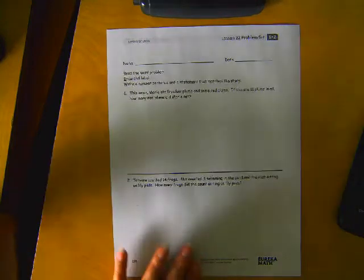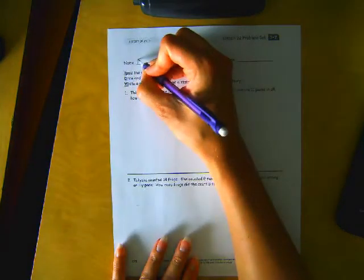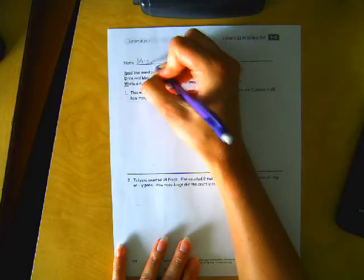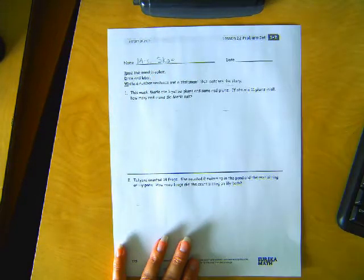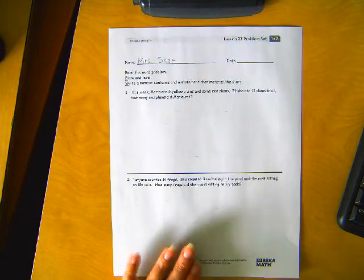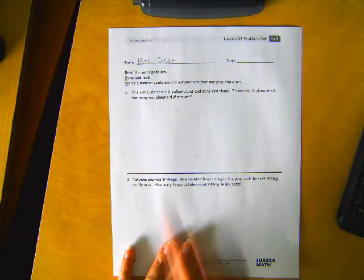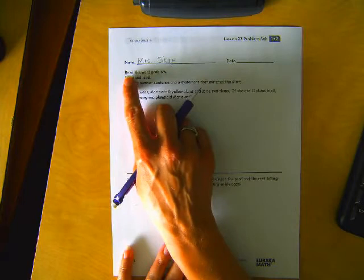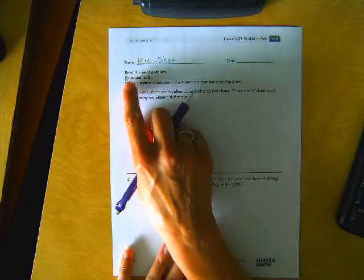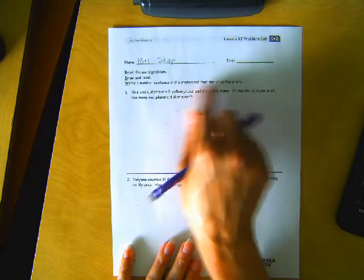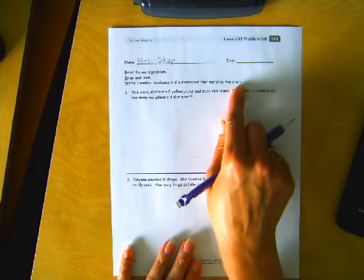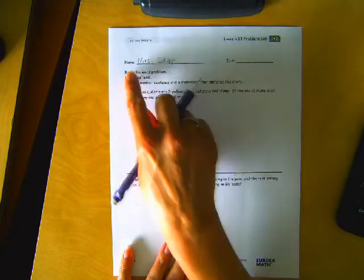Name on your paper, first thing. Okay, here are the directions. Read the word problem, draw and label, write a number sentence and a statement that matches the story. Okay, so we need to read, draw, write.